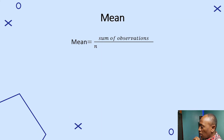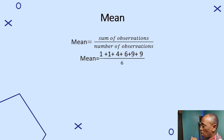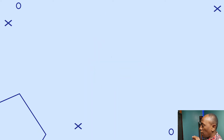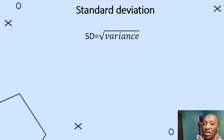Let's calculate the mean. The formula for the mean is the sum of observations divided by the number of observations. The mean equals 1 + 1 + 4 + 6 + 9 + 9 divided by 6. The total is 30 divided by 6, so the mean is 5.